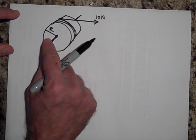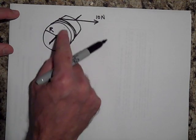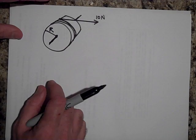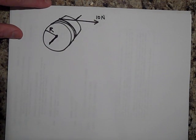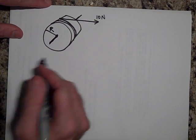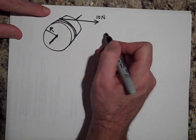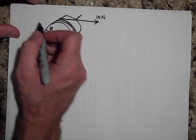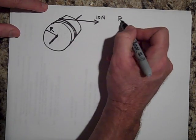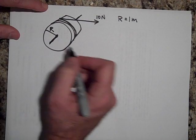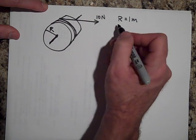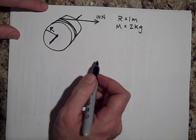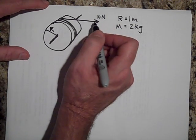So pulling with 10 newtons, it's going to go and real fast after a while. So if we want to know just what the angular acceleration is going to be, this is what we'll do. Well, I need to give you some other things. This is 10 newtons. Let's have R equal one meter. And let's have the mass of the thing be two kilograms. And we're pulling with 10 newtons.